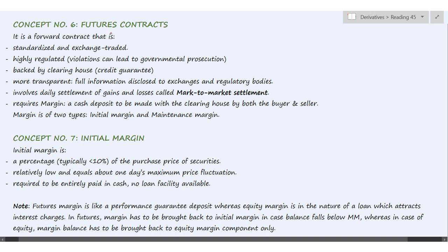Concept number six: futures contracts. These are the same as forward contracts, except that these are exchange-traded. So these are standardized and the terms of the contract cannot be changed or modified. These are highly regulated, and if there is any violation, that leads to governmental prosecution.